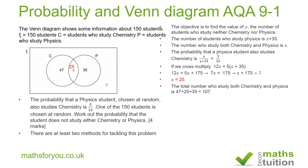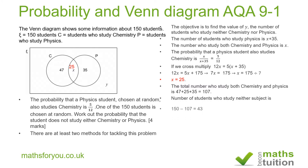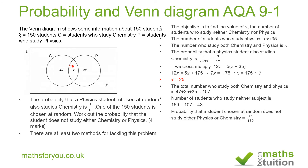We're looking at 150 students now. To find y we subtract 107 from 150, and that gives us 43. So 43 students do not study either physics or chemistry, and the probability of that would then be 43 divided by 150. You can leave it as that or use your calculator to find the value in terms of decimals or percentages.